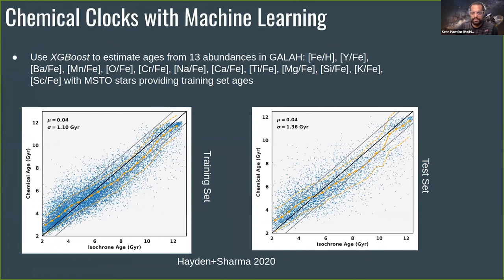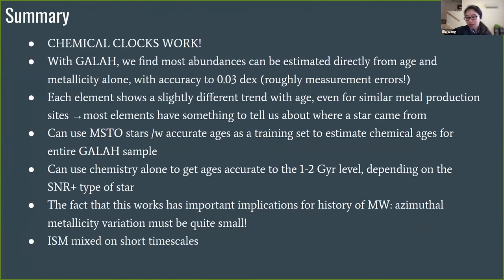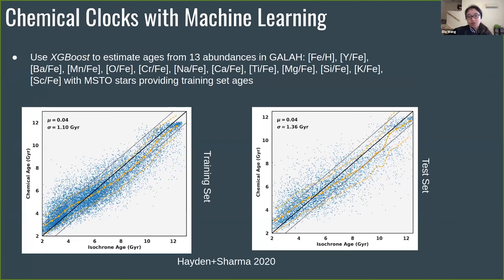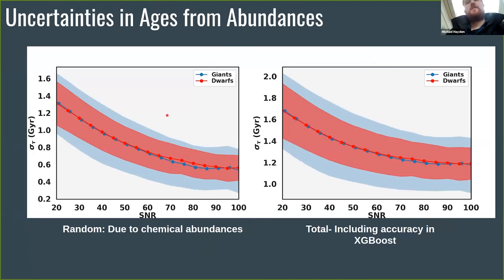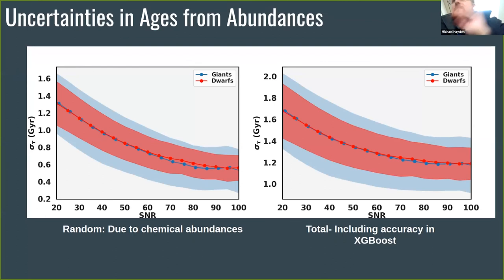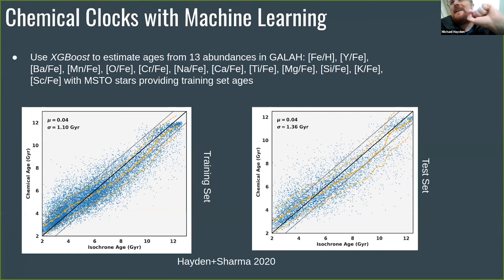A technical question: decision trees tend to give a non-continuous result — as you vary the input parameter, the output can jump up and down. What I did was take the uncertainties in all of the abundances, did a Monte Carlo, and saw how the age varied as a function of changes in abundances. I found that the PDFs are all Gaussian and appear to give a continuous age distribution without discrete jumps.